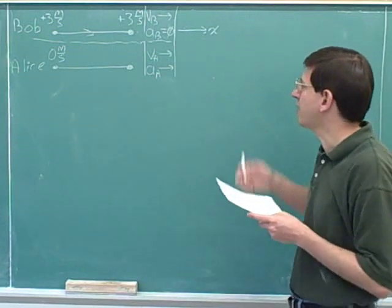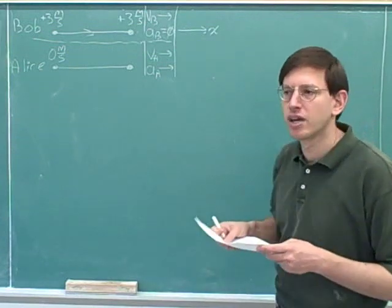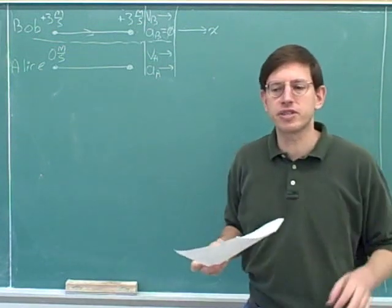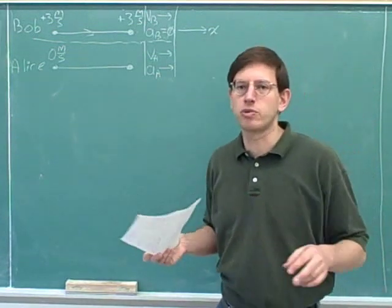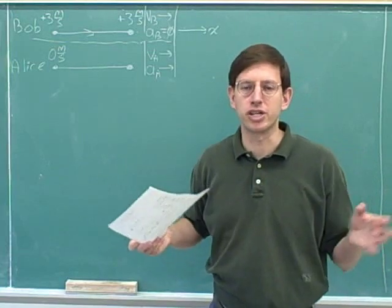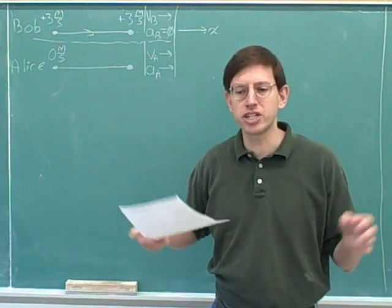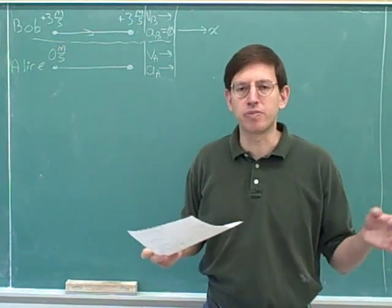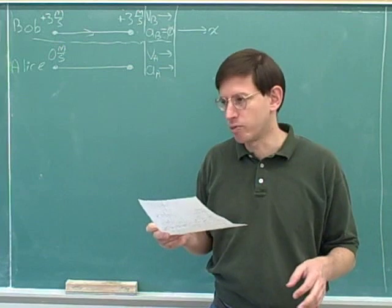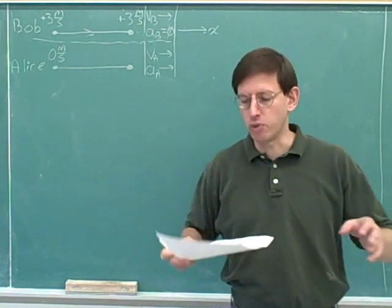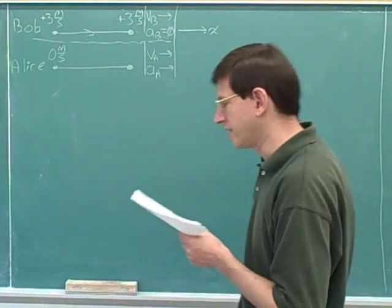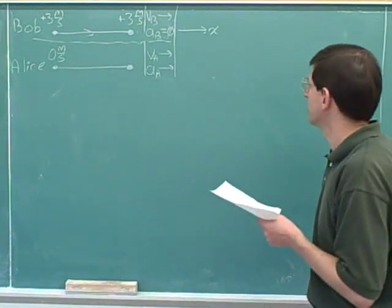We've already chosen a positive direction. As usual, we can skip step three because we're still dealing with one-dimensional motion — in one dimension, you don't need to break things down into components. So now we're ready to go on to step four, which is writing the kinematics variables.